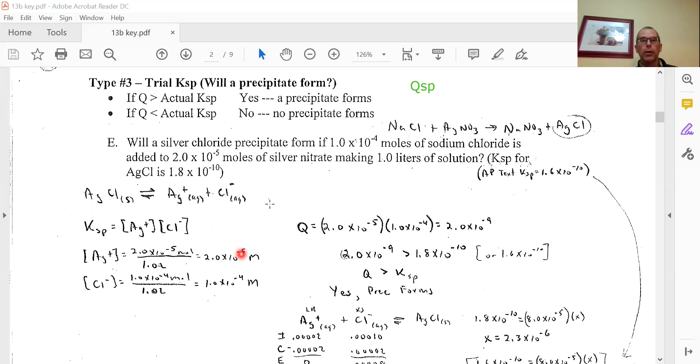For silver nitrate, we have 2×10^-5 moles of silver nitrate, which is in a 1:1 ratio with silver and nitrate. We don't care about the nitrate, we care about the silver. So it's 2×10^-5 moles of silver over 1 liter, giving us 2×10^-5 molarity for silver.